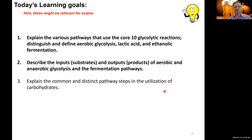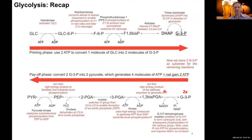Learning goals for today: we want to be able to explain the various pathways that use the core 10 glycolytic reactions from the last lecture, and distinguish and define aerobic glycolysis versus lactic acid and ethanolic fermentation. We also want to describe the inputs and outputs of these pathways, comparing aerobic and anaerobic glycolysis and the fermentation pathways.